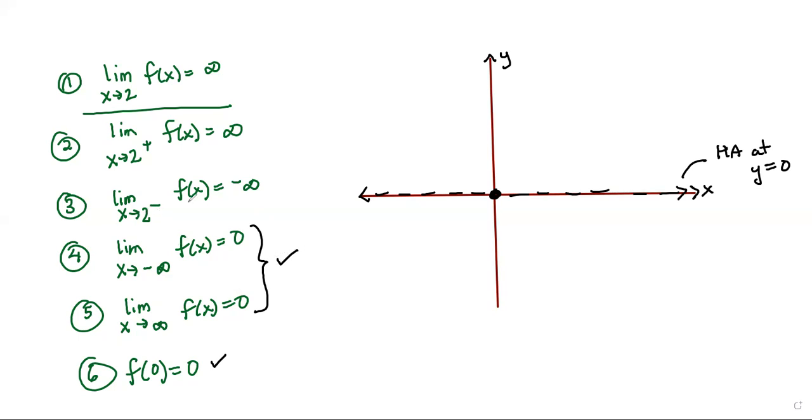Now we're approaching, we're doing number three now. So we're approaching two from the left side and we get minus infinity. That means we have a vertical asymptote. So let's go ahead and draw that. So at two, we have a vertical asymptote. So I'll write that there. So that's at x equals two.